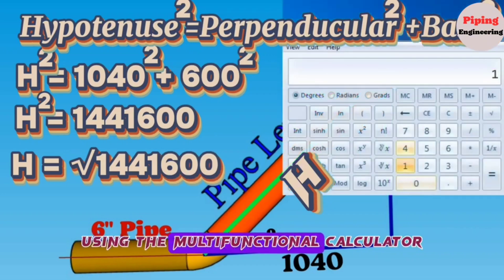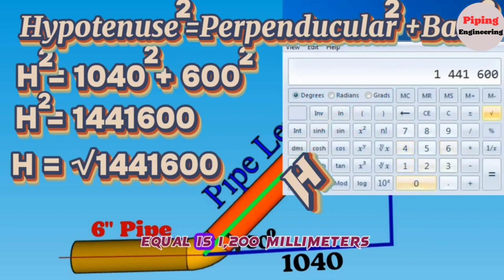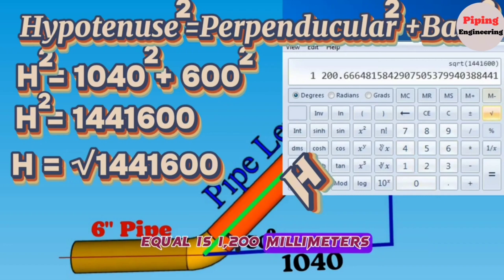Using the multifunctional calculator, we find H hypotenuse equals 1200 millimeters approximately.